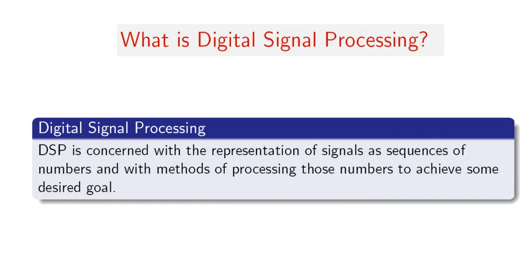What is digital signal processing? Digital signal processing is concerned with the representation of signals as a sequence of numbers, and with methods of processing those numbers to achieve some desired goal. Digital signal processing is like making a processing for signals using systems — we will have an input and we will have an output. Based on this system, we will perform changes in our signal for purposes such as filtration, multiplication, integration, or any other processes.